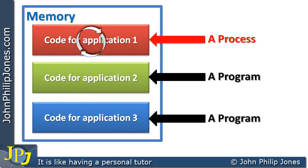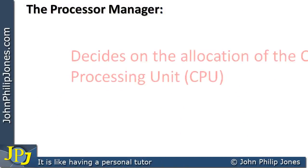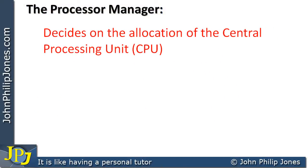This simply shows us the difference between what we mean by a process and what we mean by a program. The process manager decides on the allocation of the central processing unit — it makes a decision, says you are going to run next, and allows it to run for so many seconds or fractions of a second. But there will be other things that also dictate how long an individual process will have access to CPU time.